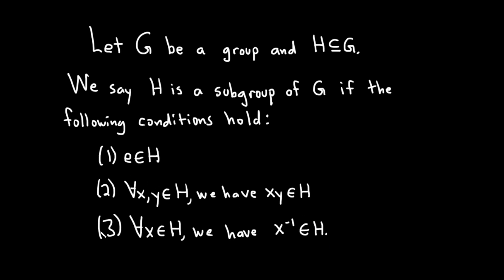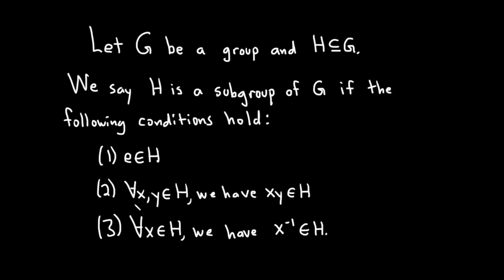So if all three of these conditions are satisfied, then we say H is a subgroup of G. Obviously H has to be a subset of G, and you have to have all of these conditions. Let's go ahead and do a simple example where we prove a specific set is a subgroup.